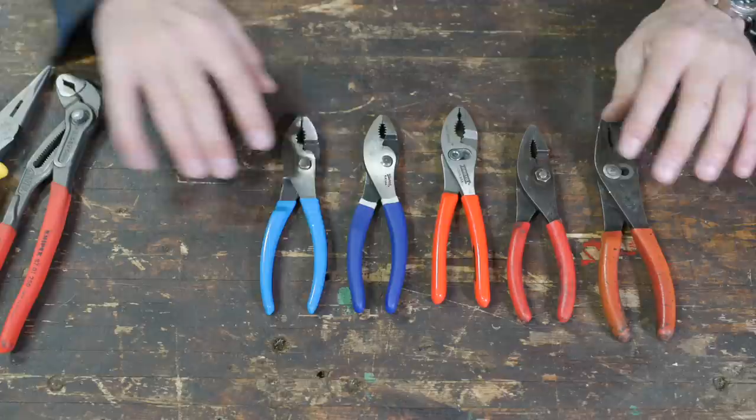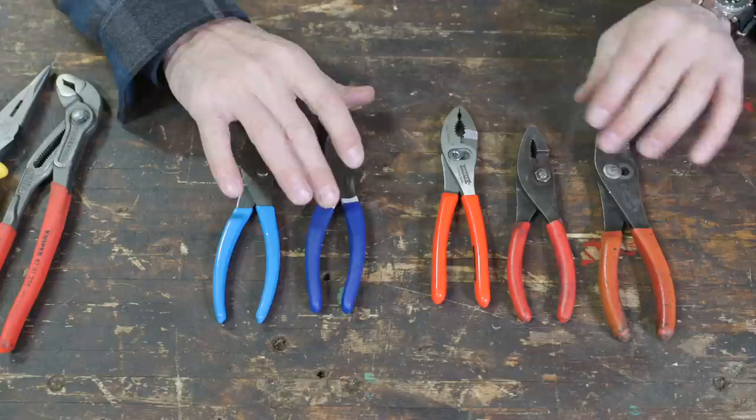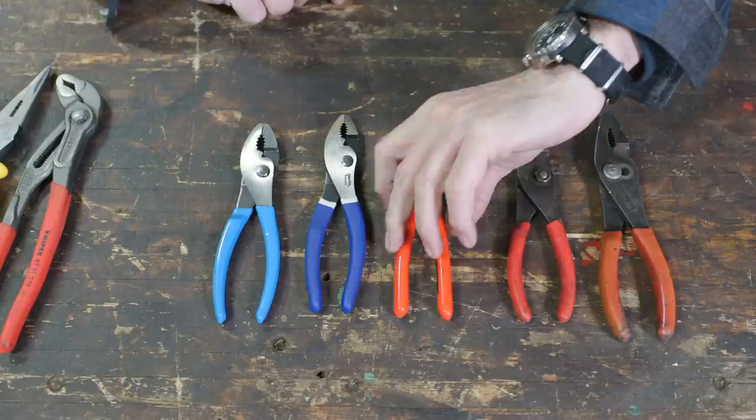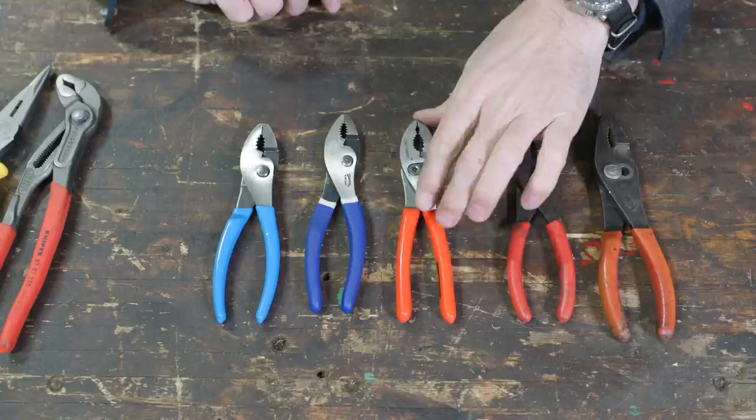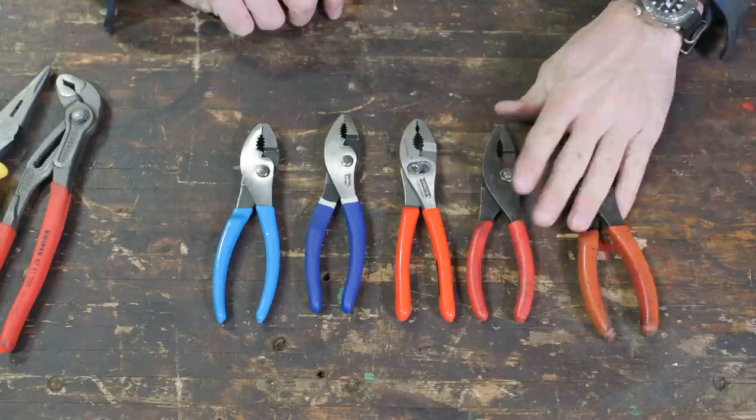A couple brands not represented here, MAC and SK, but they were at the same price with the snap-on. So this is what we have: we've got the channel lock that came in at about $15, the Williams which was right around $18, the Proto which has been purchased by Stanley, and my snap-on large and small pliers.